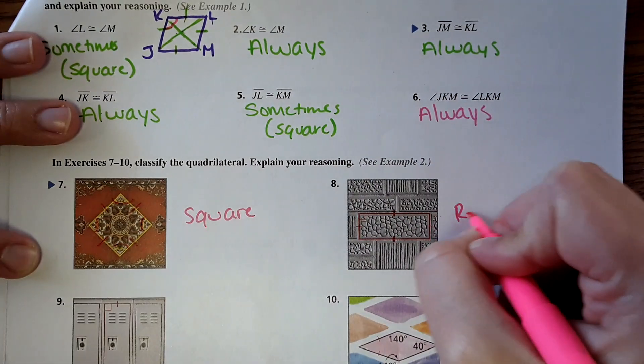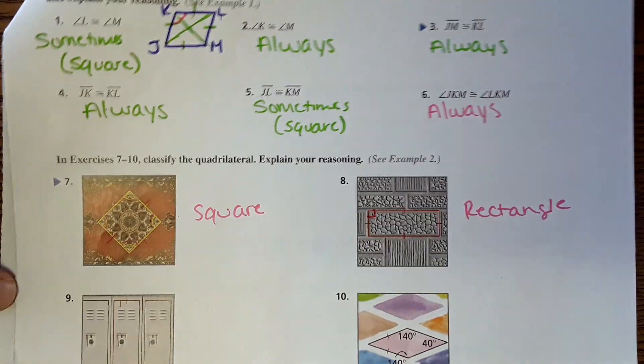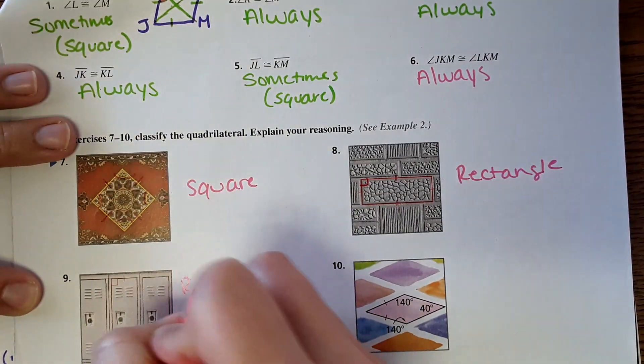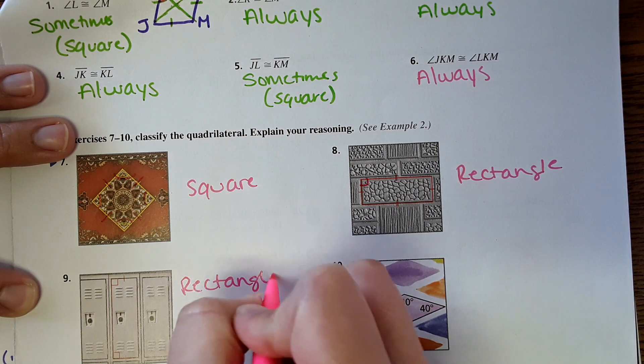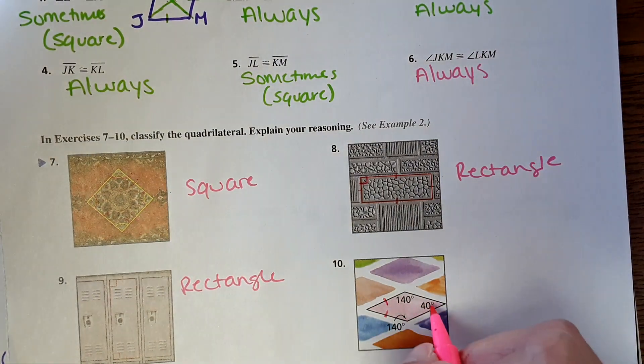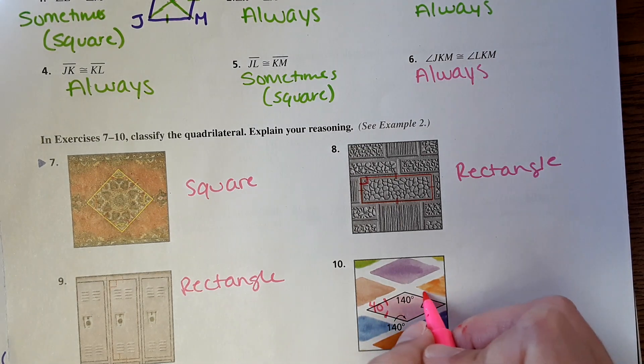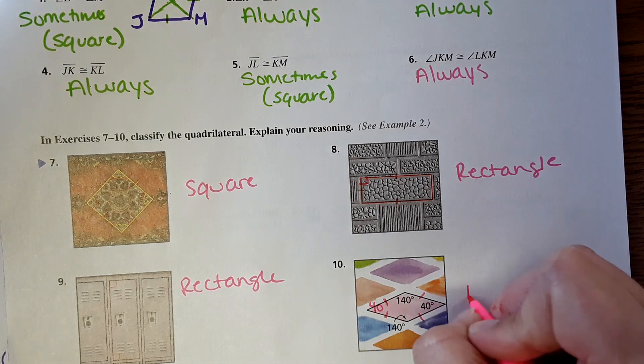This one, rectangle. It shows the 90 degree angle here. And then this one, again, rectangle. This one, it shows these two sides equal. It also shows this would have to be 40 degrees. So that means these would have to be equal. So this is a rhombus.